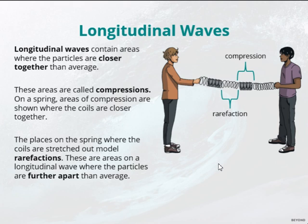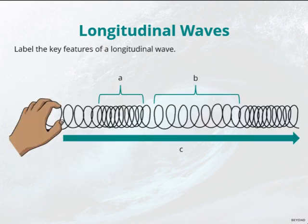On a spring, areas of compression are shown where the coils are closer together. The places on the spring where the coils are stretched out are modeled by rarefaction. These are areas on a longitudinal wave where the particles are farther apart than average. So, if we are labeling this: the coiled up or closer-together coils are compressions, and the farther-apart coils are rarefactions.